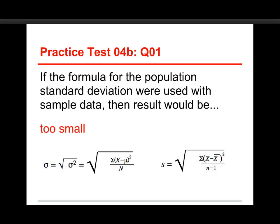The point here is, if you use the population formula with a sample, it would be too small. By changing the denominator — subtracting 1, making the denominator a little smaller — that increases the overall value, and that compensates exactly. It's not an approximation; it's an exact compensation to get the sample standard deviation where it needs to be.